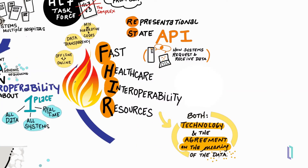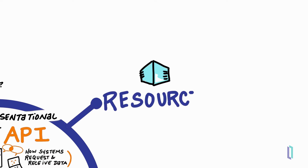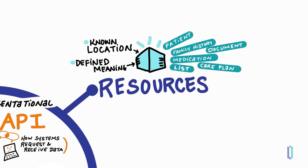Let's take a look at the elements that make up FHIR. First, FHIR resources are logically discrete data concepts, such as a patient, medication, or document, which have a defined meaning and a known location on a server. A FHIR resource includes all the data elements necessary to define the data concept. For example, the patient resource includes elements such as given name, family name, and birth date.